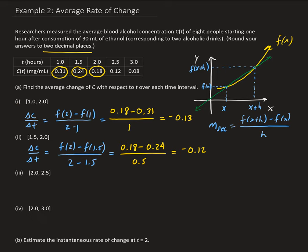For the units, since C of T represents concentration over time, the units are milligrams per milliliter per hour. The same units apply to both of these results — milligrams per milliliter per hour.